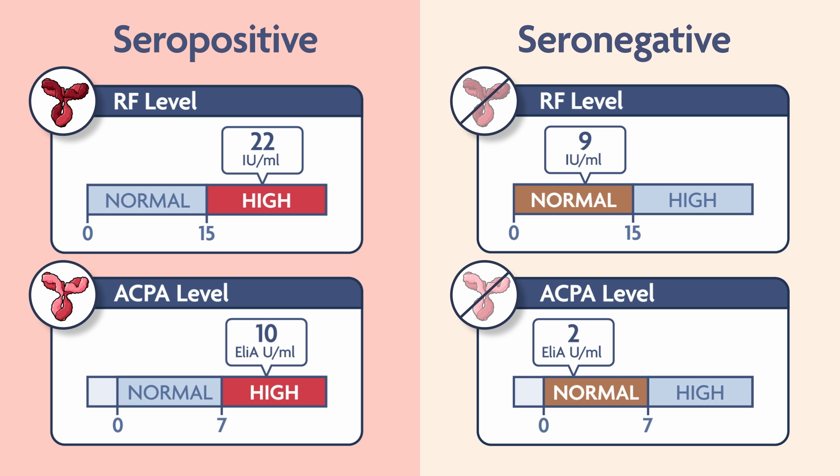However, other types of autoantibodies may be present in seronegative patients. In general, we view seronegative and seropositive as being really different diseases. Seropositive individuals have certain genes associated with their disease that are not found, for example, in seronegative RA, and disease severity is generally significantly worse in seropositive disease.